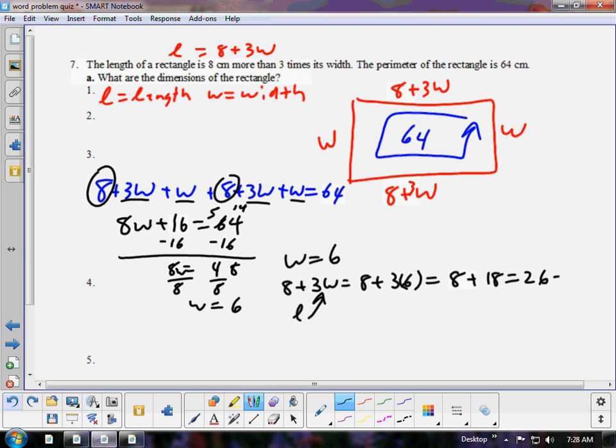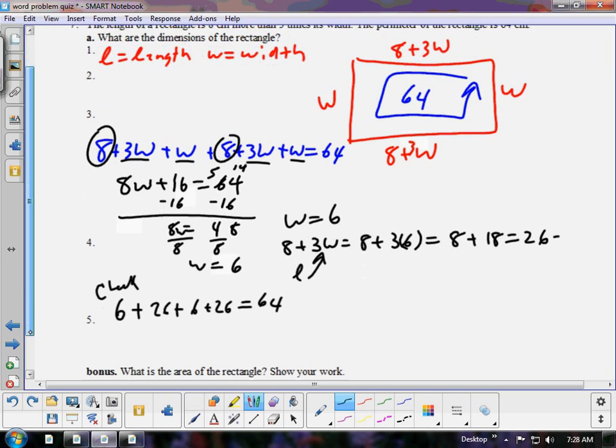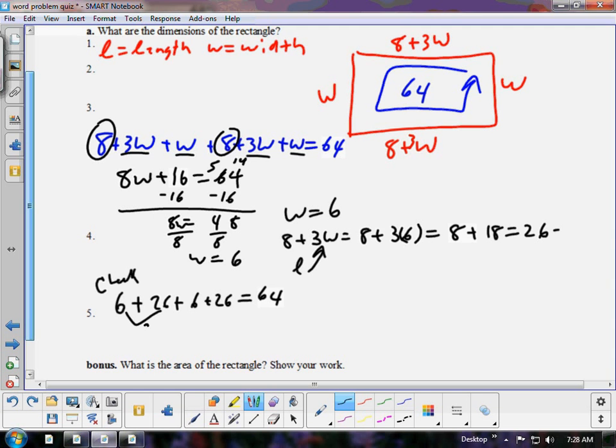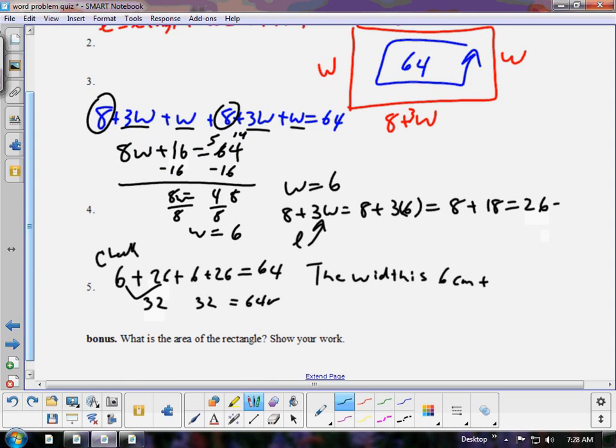So, let's see if it works out. Does it check? Is 6 plus 26 plus 6 plus 26, does that equal 64? Well, this is 32, this is 32. And that checks out to be 64. So, again, in a complete sentence, what are the dimensions? The width is 6 centimeters. And the length is 26 centimeters.